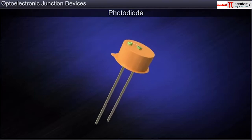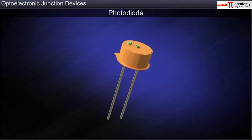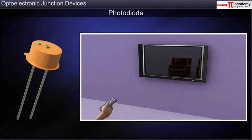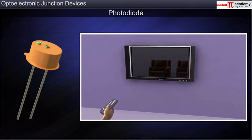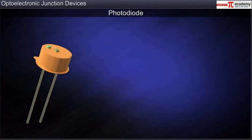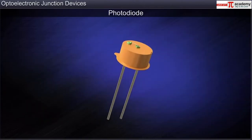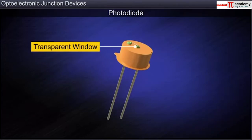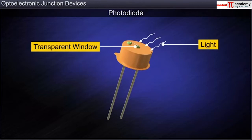A photodiode is a device that is used to detect optical signals. It is a photodiode in your TV set that allows you to operate your TV using a remote. A photodiode is a specially fabricated PN junction diode with a transparent window that allows light to be incident on the diode.